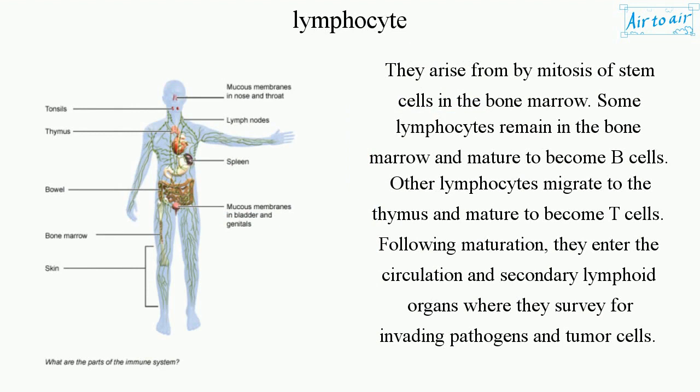They arise from mitosis of stem cells in the bone marrow. Some lymphocytes remain in the bone marrow and mature to become B cells. Other lymphocytes migrate to the thymus and mature to become T cells. Following maturation, they enter the circulation and secondary lymphoid organs where they survey for invading pathogens and tumor cells.